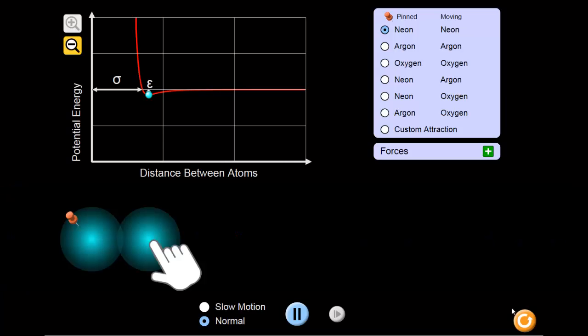This screencast uses the FET simulation for atomic interactions, which can be found at this link. This is a graph of the two atoms found beneath it.